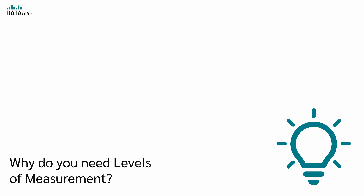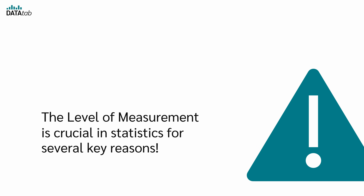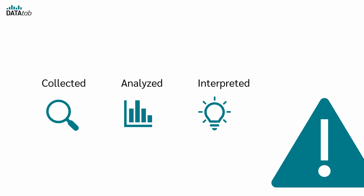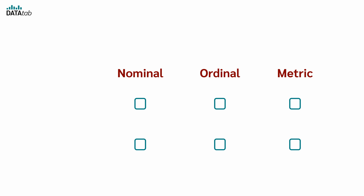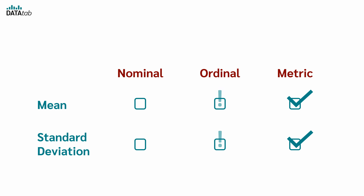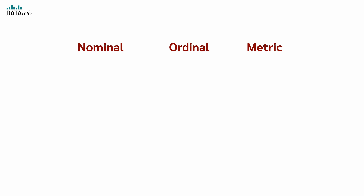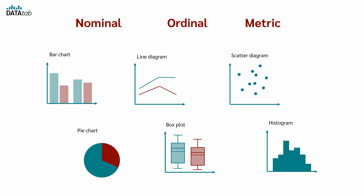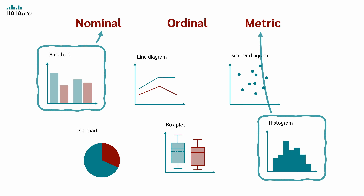Why do you need levels of measurement? The level of measurement is crucial in statistics for several key reasons. It tells us how our data can be collected, analyzed and interpreted. Different levels of measurement support different statistical analysis. For instance, mean and standard deviation are suitable for metric data. In some cases it may be suitable for ordinal data, but only if you know how to interpret the results correctly, and it definitely makes no sense to calculate it for nominal data. The level of measurement also tells us which hypothesis tests are possible and determines the most effective type of data visualization. For example, bar charts are great for nominal data, while histograms are better suited for metric data.